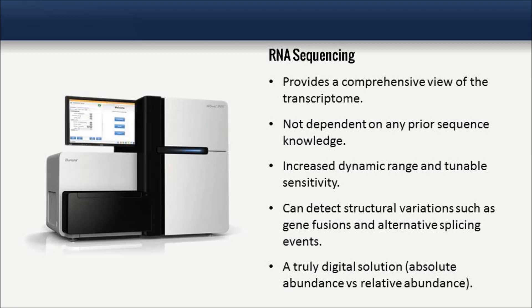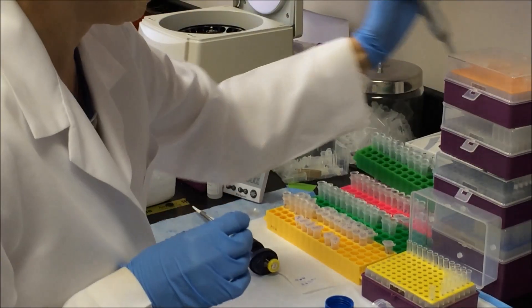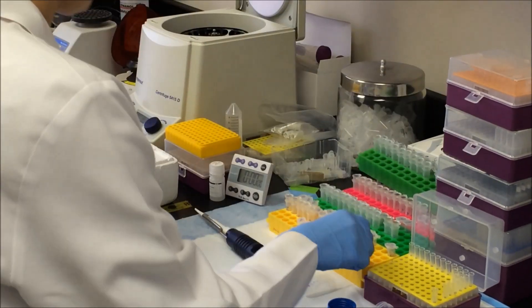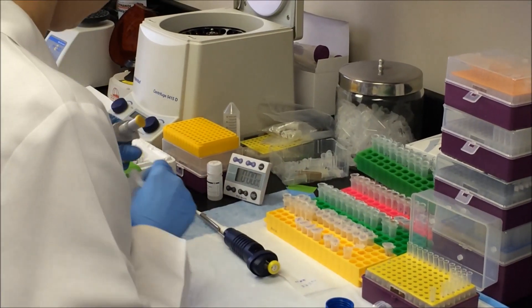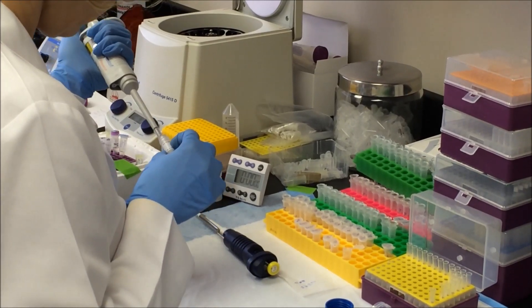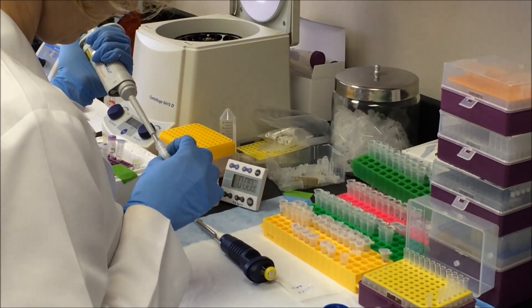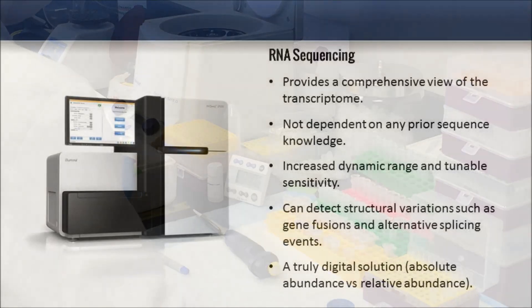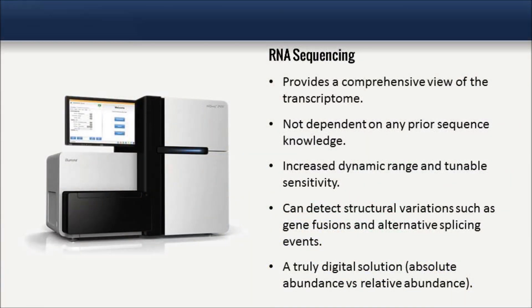Unlike microarrays which measure probe intensities, sequencing quantifies discrete digital read counts aligned to a particular sequence. Because you are sequencing each individual transcript, the technology is inherently more sensitive and superior in detecting low-abundance transcripts and differentiating biologically critical isoforms. In fact, the dynamic range is tunable and potentially unlimited through continuous sequencing.